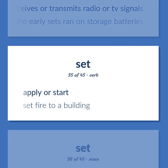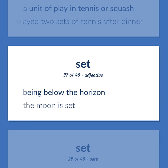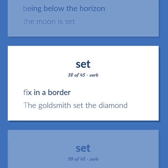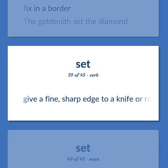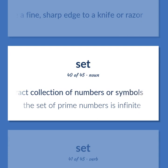Set: Apply or start — set fire to a building. A unit of play in tennis or squash — they played two sets of tennis after dinner. Being below the horizon — the moon is set. Fix in a border — the goldsmith set the diamond. Give a fine, sharp edge to a knife or razor. Mathematics: an abstract collection of numbers or symbols — the set of prime numbers is infinite.